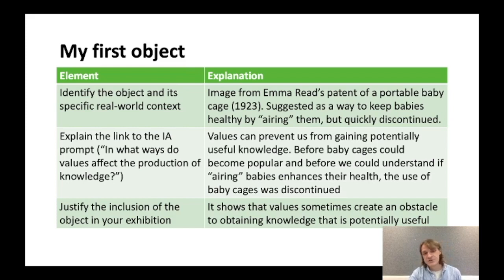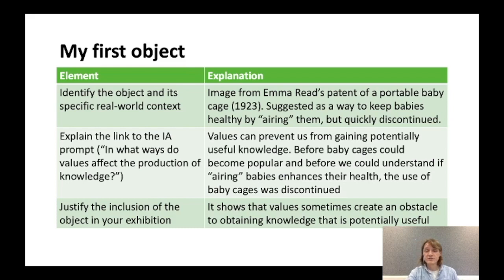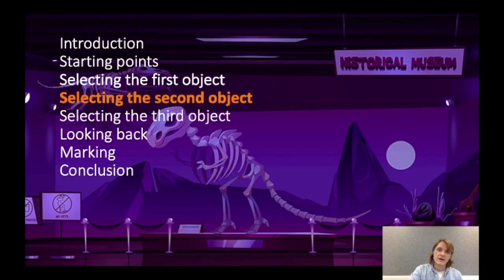How am I going to justify the inclusion of the object in my exhibition? My object shows that values sometimes create an obstacle to obtaining knowledge that is potentially useful. Now over to the second object — I have the first one and I need to select the second.